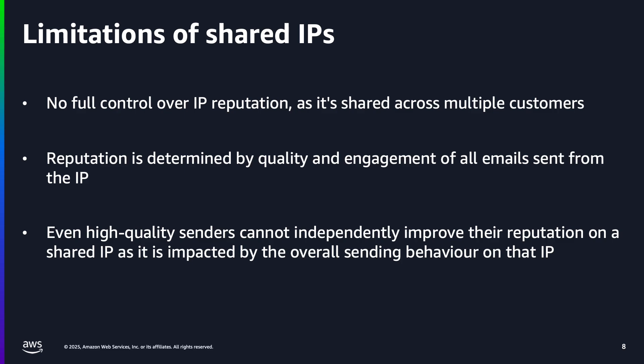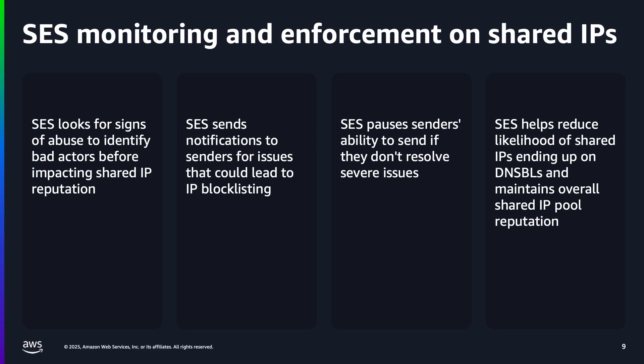One limitation of shared IPs is that you do not have full control over the IP reputation as it is shared across multiple customers. The reputation of the shared IP is determined by the quality and engagement of all emails sent from that IP, regardless of the individual sender. This means that even high-quality senders cannot independently improve their reputation on a shared IP, as it is impacted by the overall sending behavior on that IP. Our systems look for signs of abuse to identify bad actors before impacting the shared IP reputation. If we detect sending patterns or other characteristics that could lead to an IP address being added to a DNSBL or being blocked by major email providers, we send a notification to the sender. If the situation is severe or if the sender doesn't fix the issue after we send the notification, we'll pause the sender's ability to send email until they resolve the issue. Enforcing our sending policies in this way helps reduce the likelihood that our IP addresses end up on DNSBLs and helps maintain the overall reputation of the shared IP pool for all customers using it.